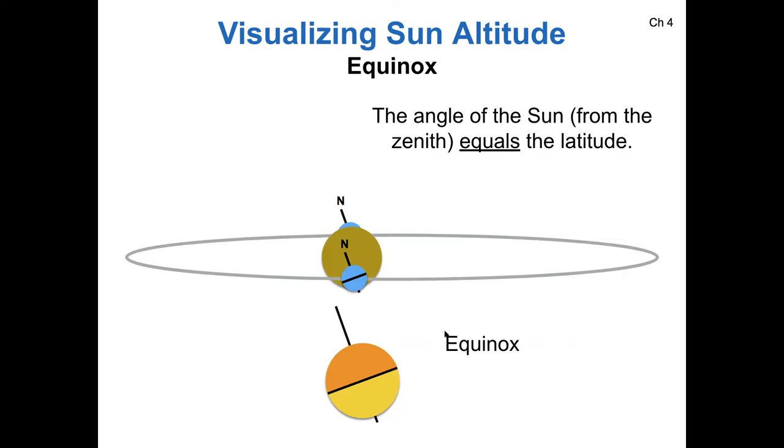And so in this case, the angle of the sun from your zenith is equal to your latitude. If you go north by 44 degrees, then the sun will be 44 degrees from your zenith.